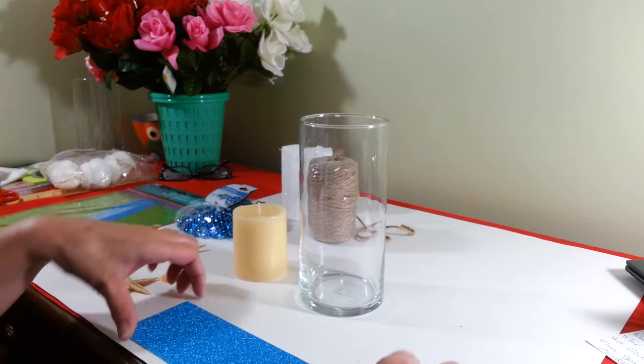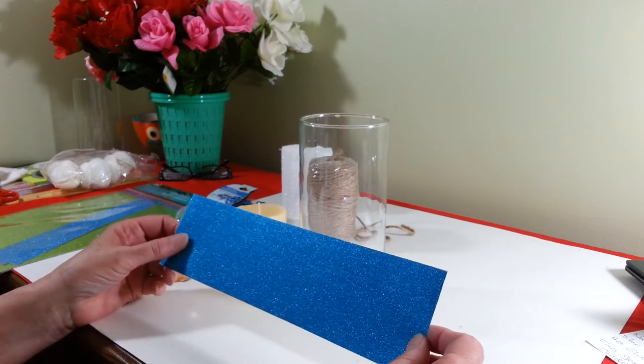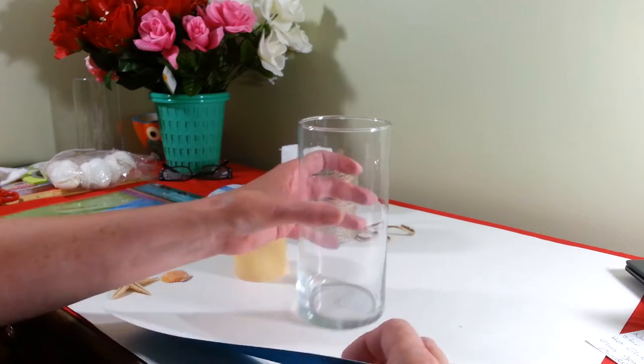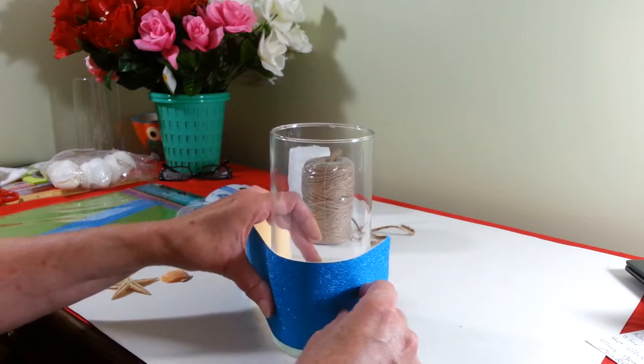Alright, so first we're going to glue our glitter paper, which I cut to a three-inch strip, just right above the bottom.